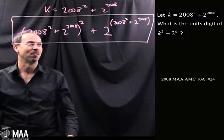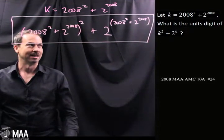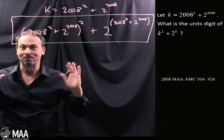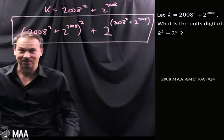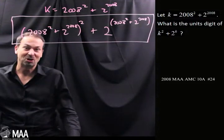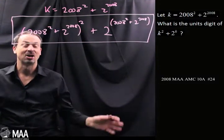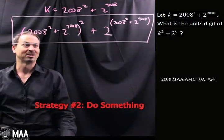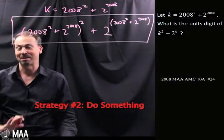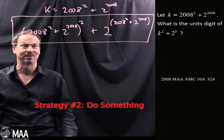This just looks overwhelming. When something is completely overwhelming and I don't have a clue what to do, strategy number 2 comes to mind, which is: do something. Doesn't matter what it is, just do something — maybe kind of relevant to the problem. Let's do something relevant to this.